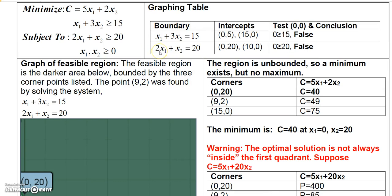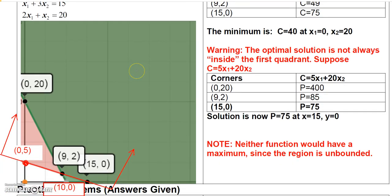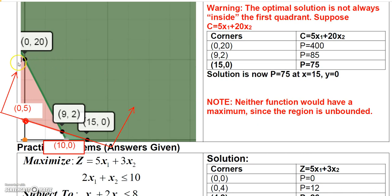To graph the other boundary, 2x₁ + x₂ = 20: when x₁ = 0, x₂ = 20, and when x₂ = 0, x₁ = 10. We plot the points (0, 20) and (10, 0) and connect those dots. Testing the origin for this inequality also gives a false statement, so we must shade that side of that line as well.